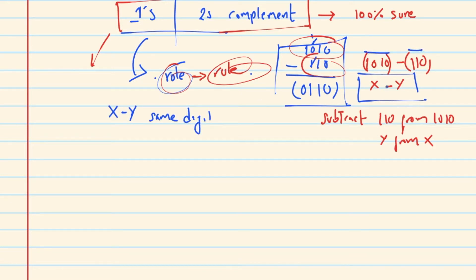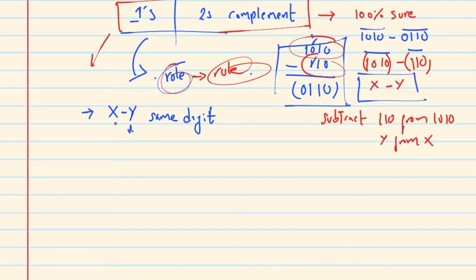Suppose you can use 4 or 3 digits, and you can use 0. If you want to use the same digits, we are going to start with y. Suppose we use one's complement to compute this.